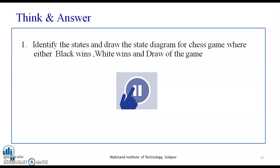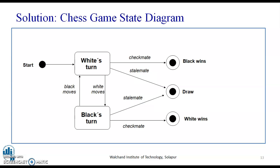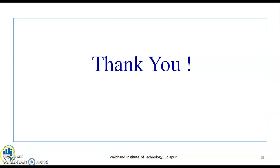Students are requested to pause the video and draw the state diagram for a chess game, where either black wins, white wins, or there is a draw. The solution shows states for white's turn and black's turn, with three possible end conditions: black wins, draw, and white wins. Transitions are labeled as black's move, white's move, stalemate, and checkmate.